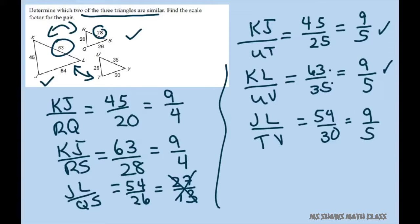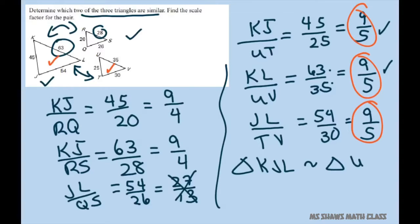So the two triangles, so you would write triangle KJL is similar to triangle UTV. And the scale factor is 9 divided by 5.